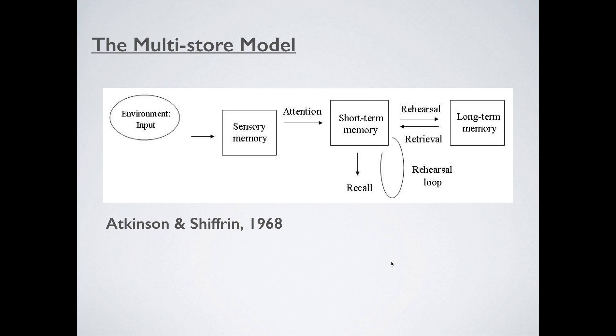Atkinson and Shiffrin would argue that all memories flow from left to right in this model. We start with information on the outside — something you want to remember — it goes into sensory, then STM, then long-term memory. Each store you can think of as the gateway to the next. So information must start outside the body, it must go into sensory, then short-term, then long-term.